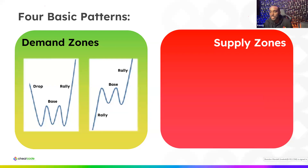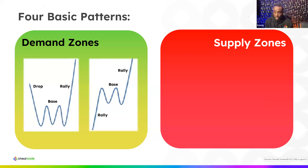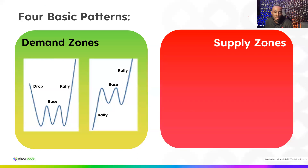Just to point out for everybody listening — when you see this drop-based rally, rally-based rally, does this not look very similar to double bottoms, triple bottoms, bull flags, et cetera? This is pretty much explaining why these things happen. What's really valuable about this institutional trading approach is that it puts the context behind the patterns we see. When people say 'technical analysis doesn't work, you're just looking at shapes,' what Brandon's talking about is the context behind why those patterns form and why they work.